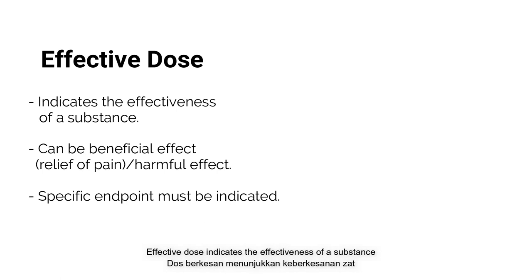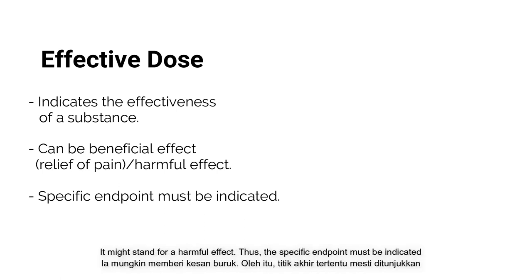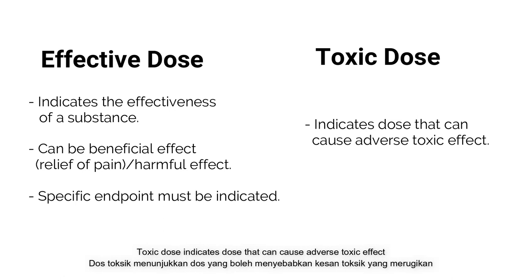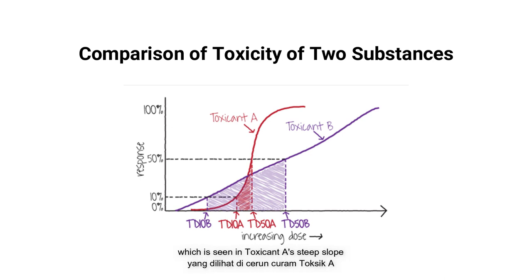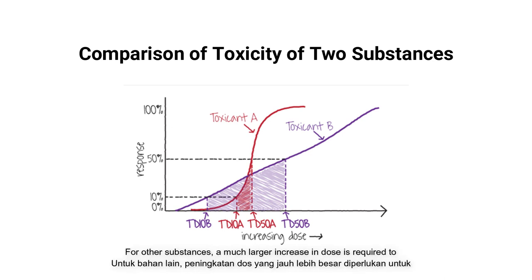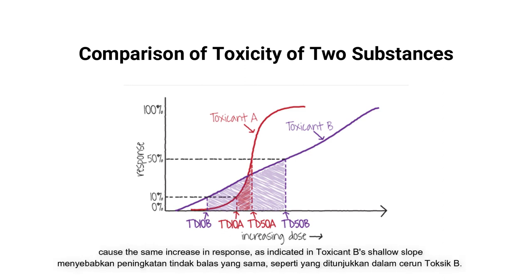Effective dose indicates the effectiveness of a substance — normally it refers to a beneficial effect such as relief of pain, but it might also stand for a harmful effect, so the specific endpoint must be indicated. Toxic dose indicates a dose that can cause adverse toxic effects. For some substances, a small increase in dose causes a large increase in response, seen in a steep slope. For other substances, a much larger increase in dose is required to cause the same increase in response, as indicated by a shallow slope.